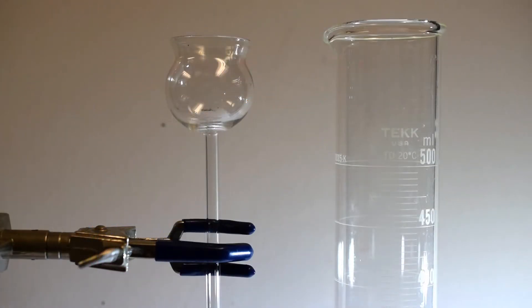To prepare the sugar density column demonstration, a 500 milliliter graduated cylinder and a thistle funnel are needed.